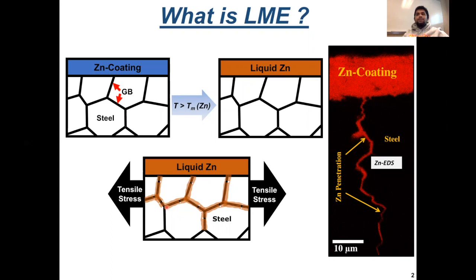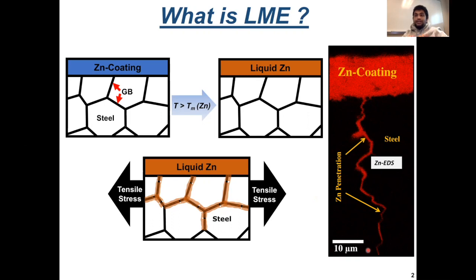Zinc penetration will weaken the boundaries and the action of the tensile stress will cause cracking of the zinc-penetrated boundary. If you look at the picture to the right, that's a zinc EDS map of a zinc-coated steel that was deformed at 700 degrees C. What we see is this is the zinc coating, that is the steel, and the zinc EDS map tells us that the zinc from the coating has penetrated into the steel. So that's the LME crack.